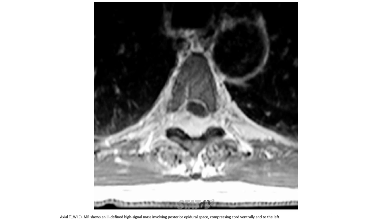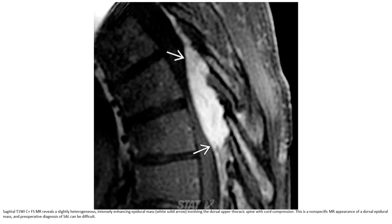T1WI with contrast shows an ill-defined high-signal mass involving the posterior epidural space compressing the cord ventrally and to the left. Another T1WI with contrast reveals a slightly heterogeneous and intensely enhancing epidural mass involving the dorsal upper thoracic spine with cord compression. This is a non-specific appearance of dorsal epidural mass and preoperative diagnosis can be difficult.